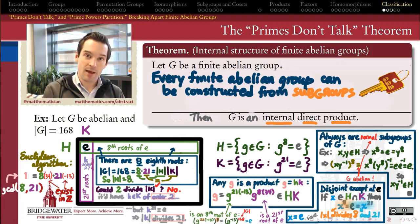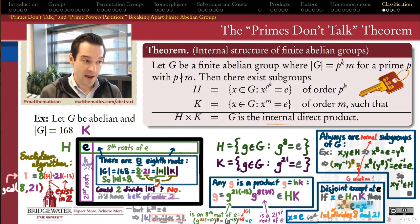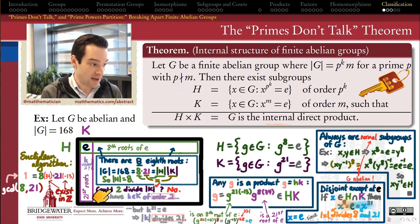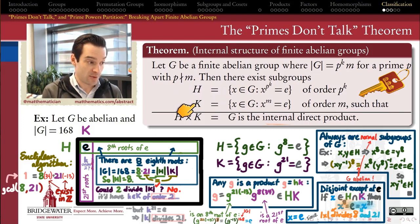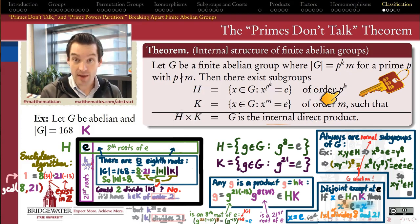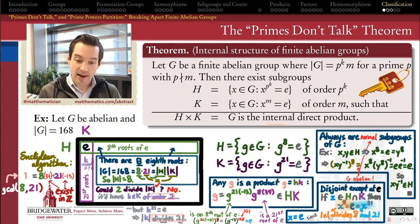This is the result that, when generalized, gives the full primes don't talk theorem. Here is the statement in its totality: if G is a finite abelian group and the order of the group factors as P^K times M — where we peel off all prime powers of P and the remainder M has no more powers of P — then there exist subgroups of all the P^K-th roots of the identity and all the M-th roots of the identity that form the internal direct product. Furthermore, the orders of these subgroups are exactly what we want: the order of H is P^K and the order of K is M.